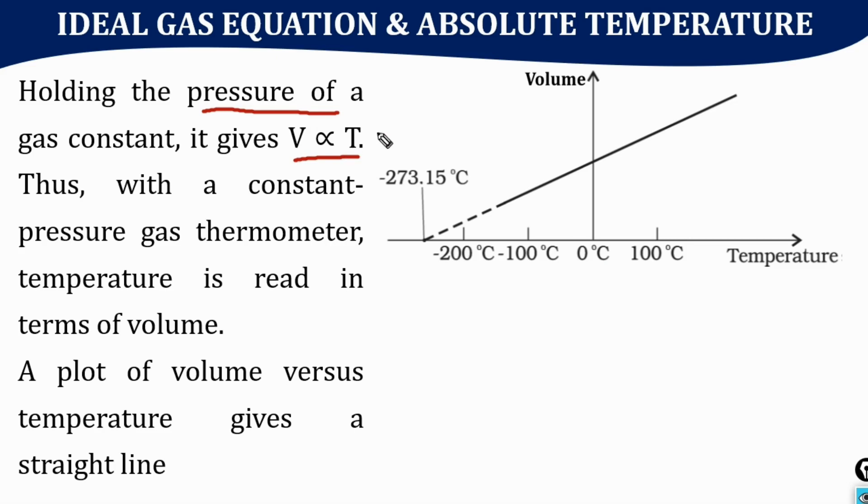When we develop a constant pressure gas thermometer, if we increase temperature, volume also increases. The volume versus temperature graph is a straight line.